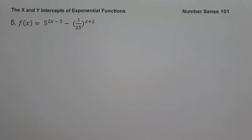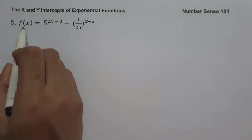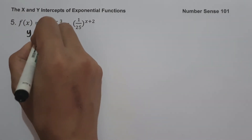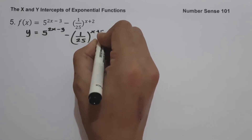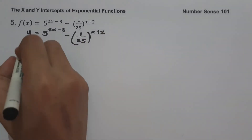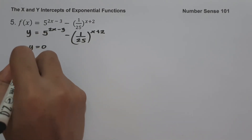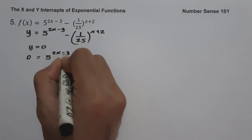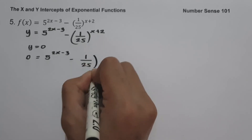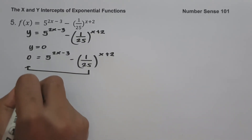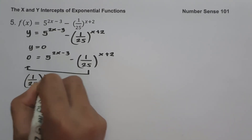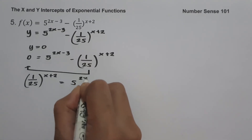On our last example, f(x) equals 5 raised to 2x minus 3 minus 1 over 25 raised to x plus 2. Changing f(x) into y: y equals 5 raised to 2x minus 3 minus 1 over 25 raised to x plus 2. To find the x-intercept, set y equal to 0: 0 equals 5 raised to 2x minus 3 minus 1 over 25 raised to x plus 2. Moving the second term gives 1 over 25 raised to x plus 2 equals 5 raised to 2x minus 3.